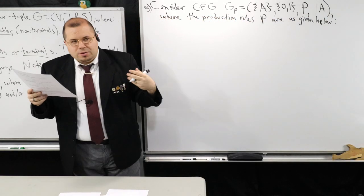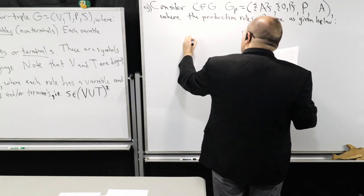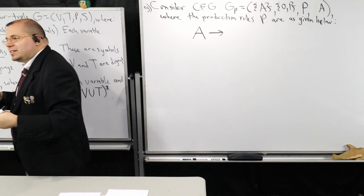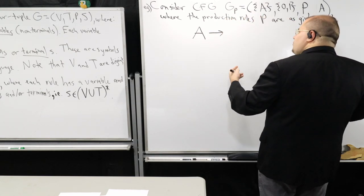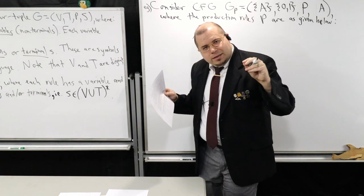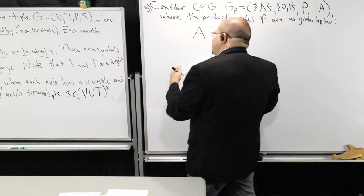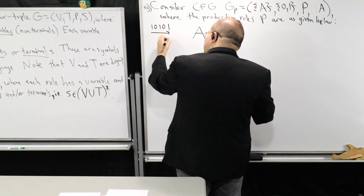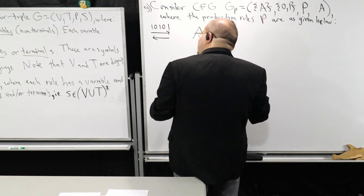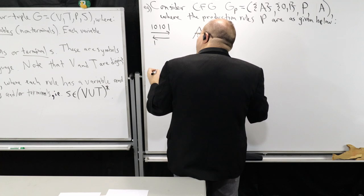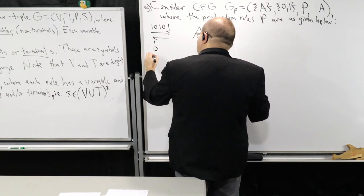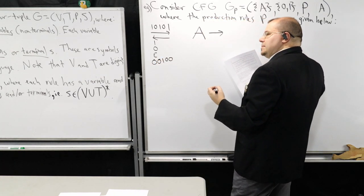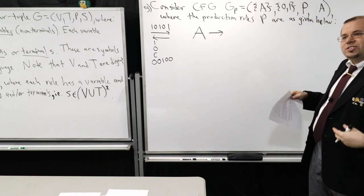A palindrome reads the same front to back. Strings like '0A0' or '1A1' are palindromes — I need zeros or ones on both sides. Single characters like '0' and '1' are palindromes. The empty string is also a palindrome. Even strings like '00100' are palindromes. So I'll design production rules: A → 0A0 | 1A1 to build up symmetric structure, and A → 0 | 1 for single-character middles, and A → ε for the even-length case where there's no middle symbol.